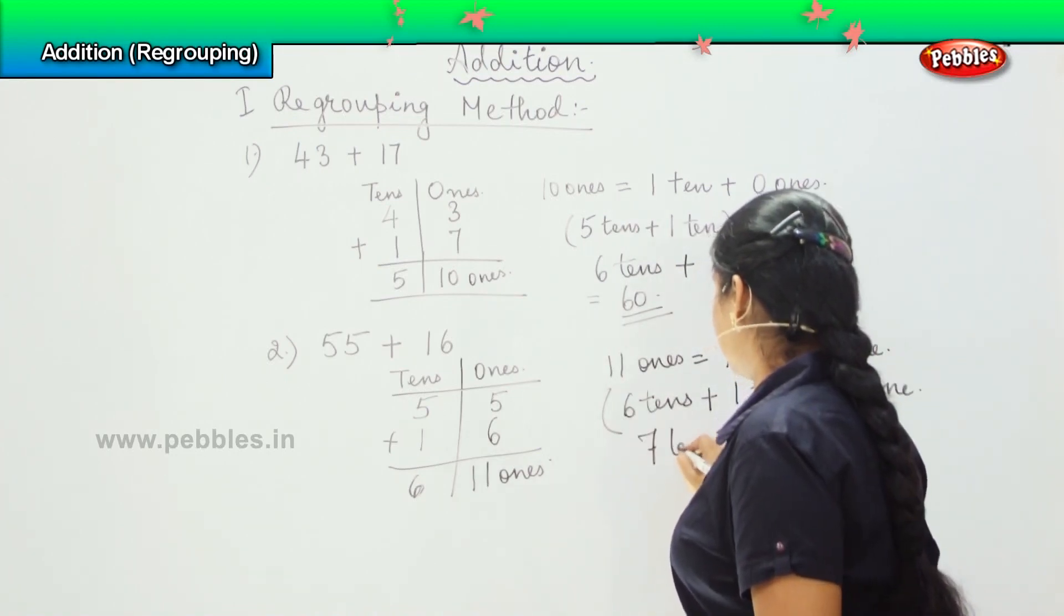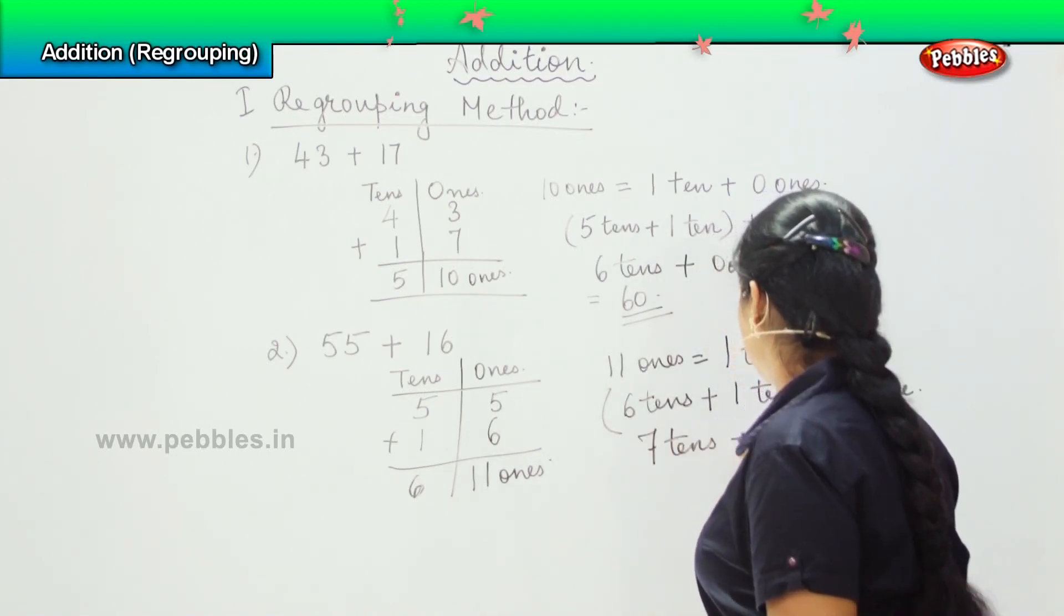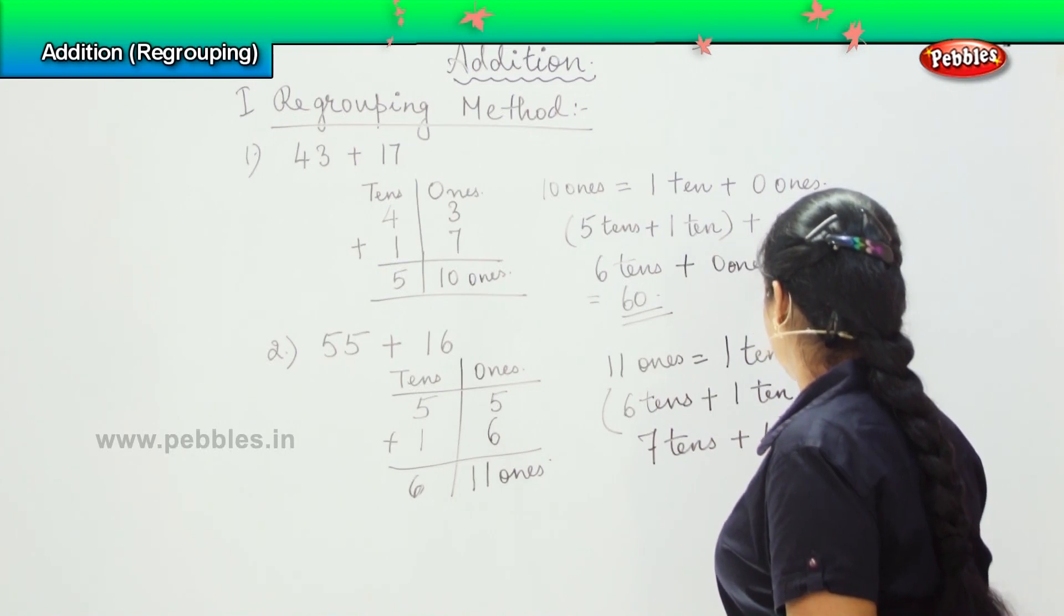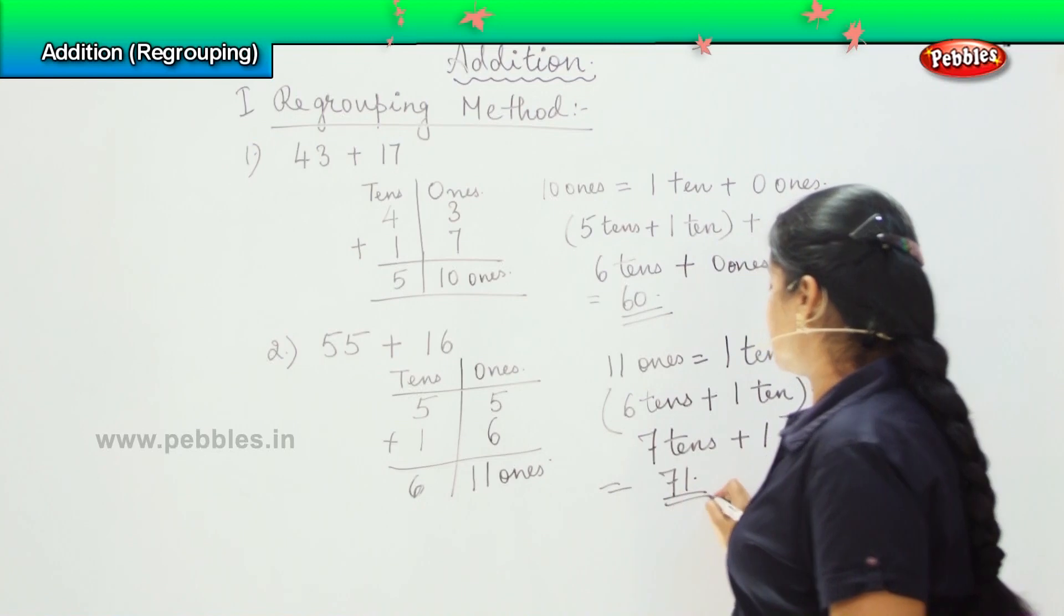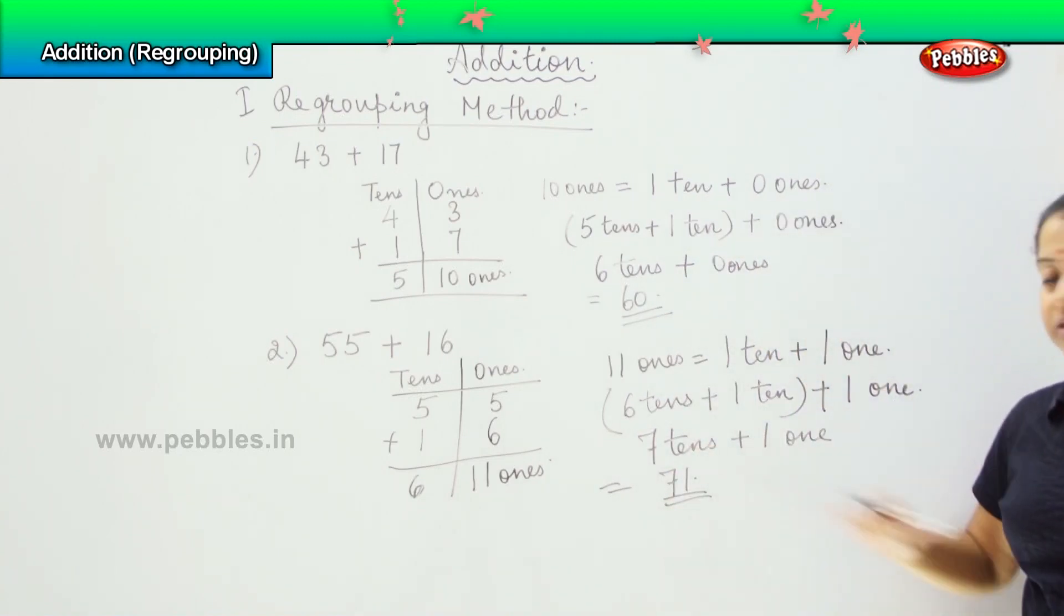So I have 7 tens plus 1 one which is nothing but 71. So my answer is 71.